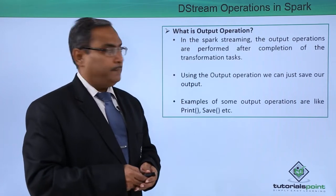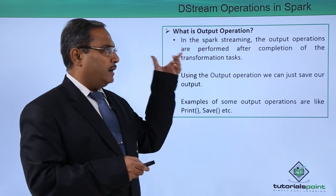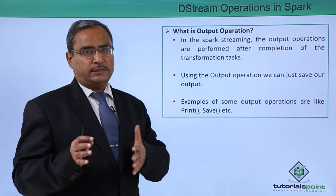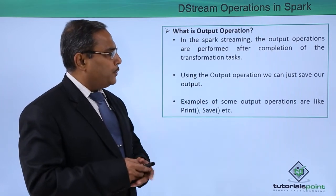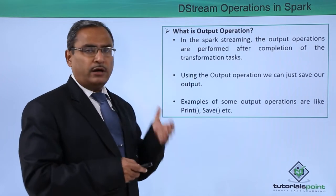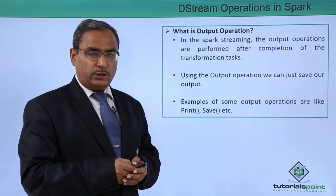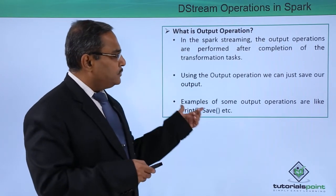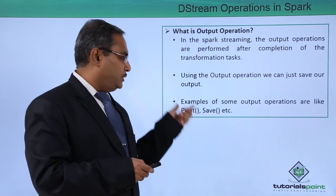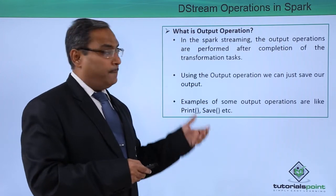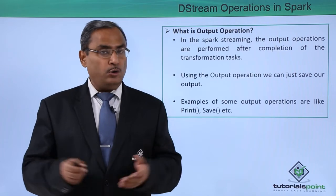What is the output operation? In Spark Streaming, the output operations are performed after the completion of the transformation tasks — then only the outputs will be obtained. Using the output operation, we can save our output, and for this purpose we have some dedicated methods and functions. Examples of some output operations are print, save, etc. These are the operations with the help of which the output of the completed operation will be saved or printed.